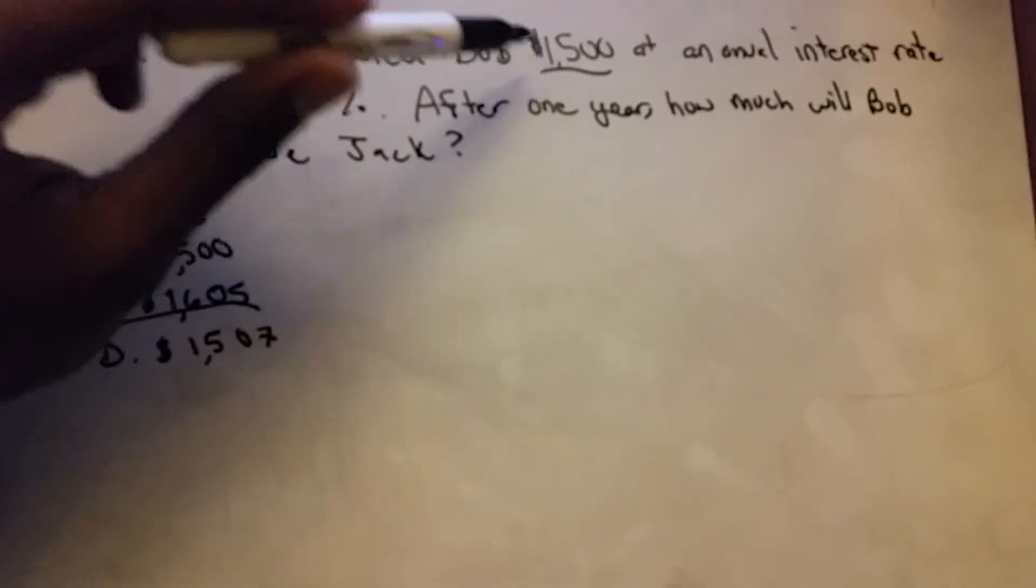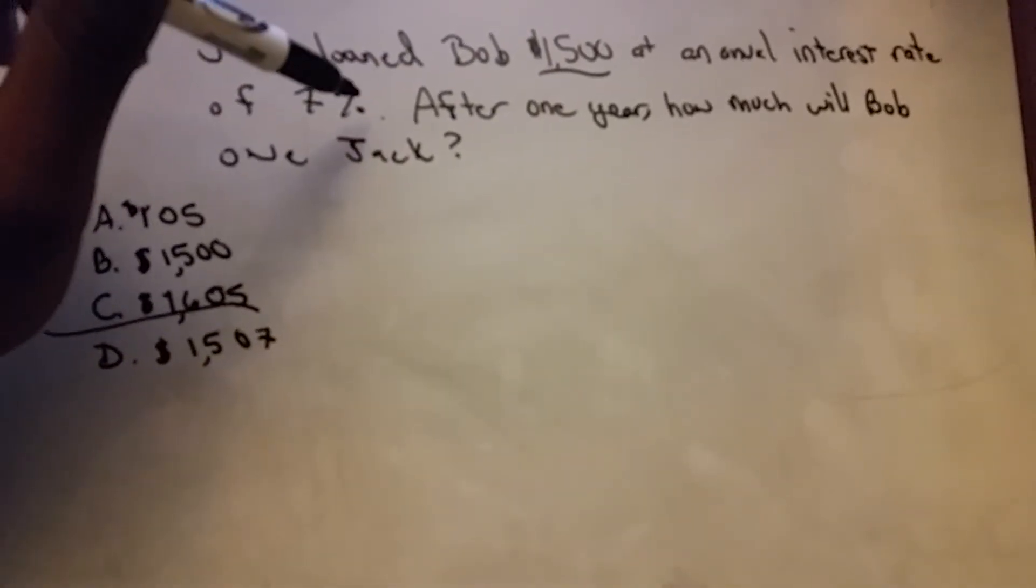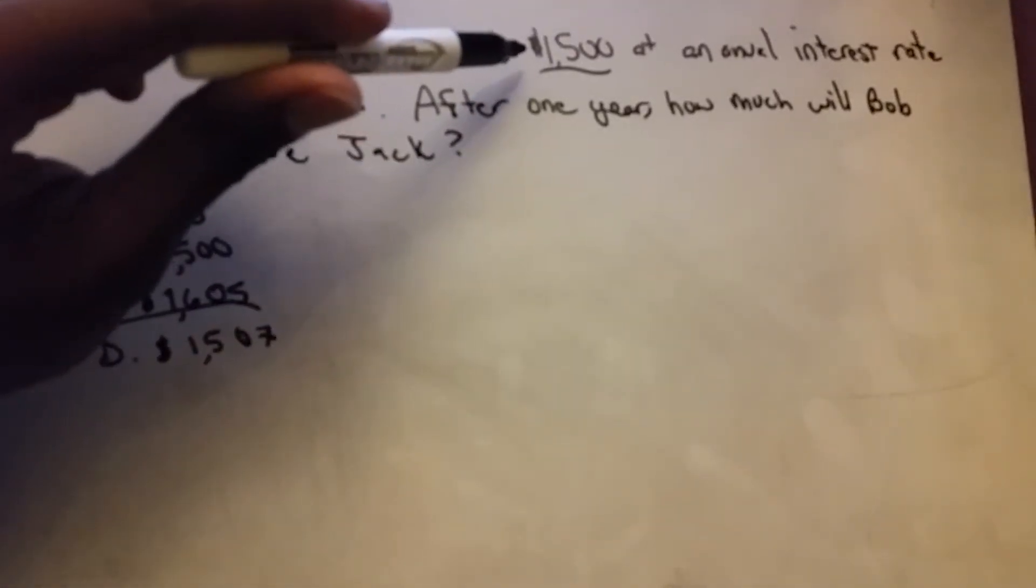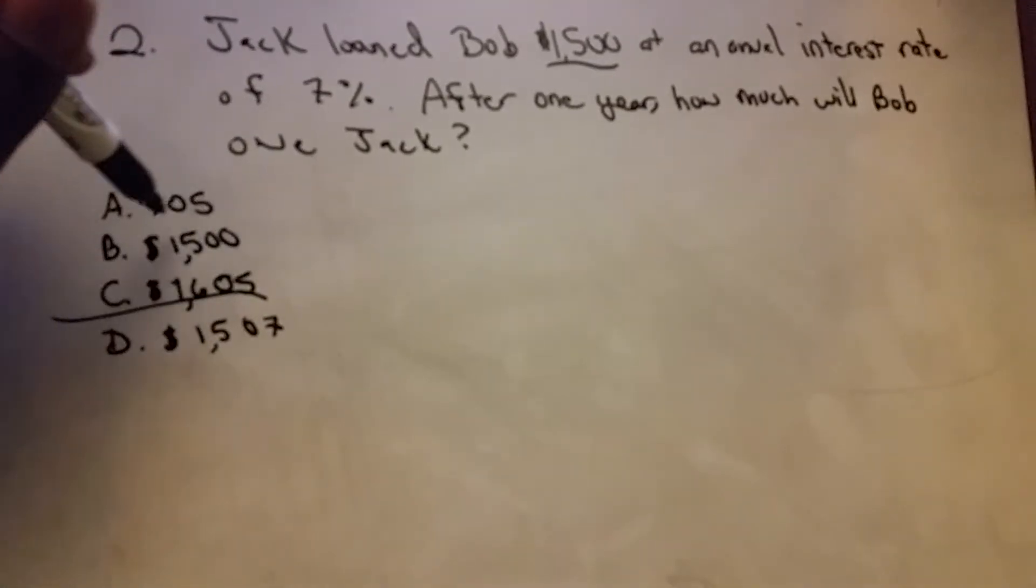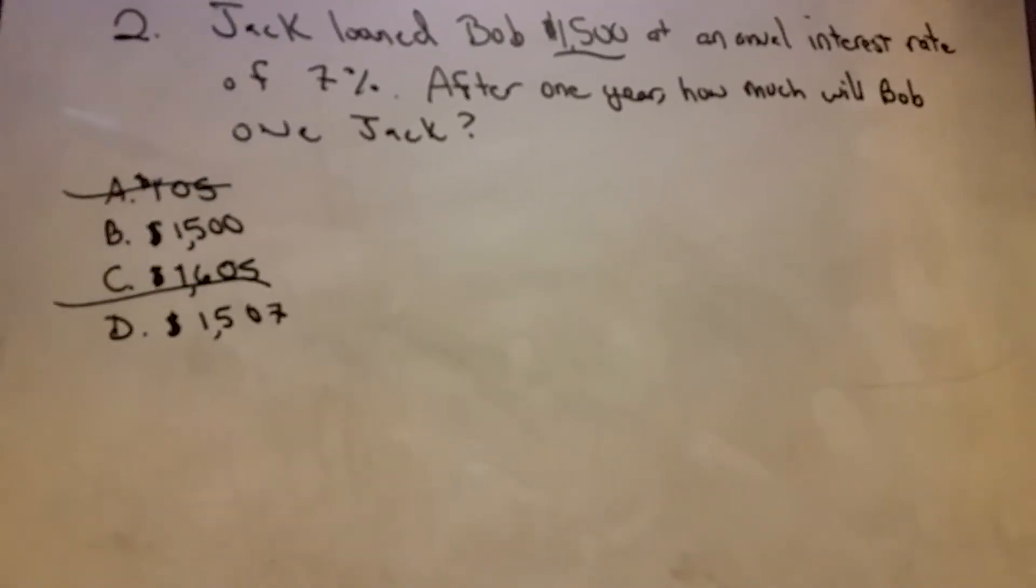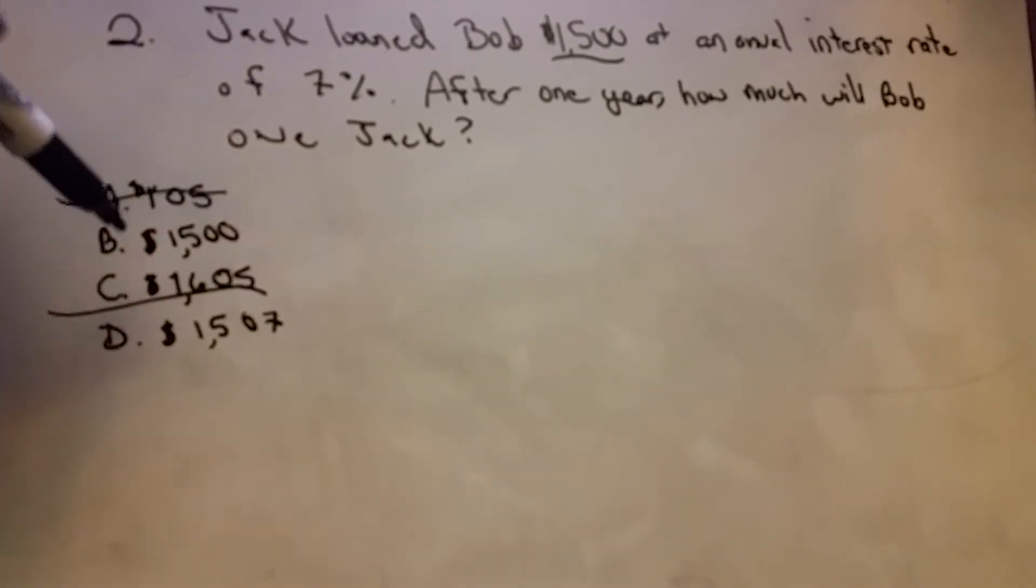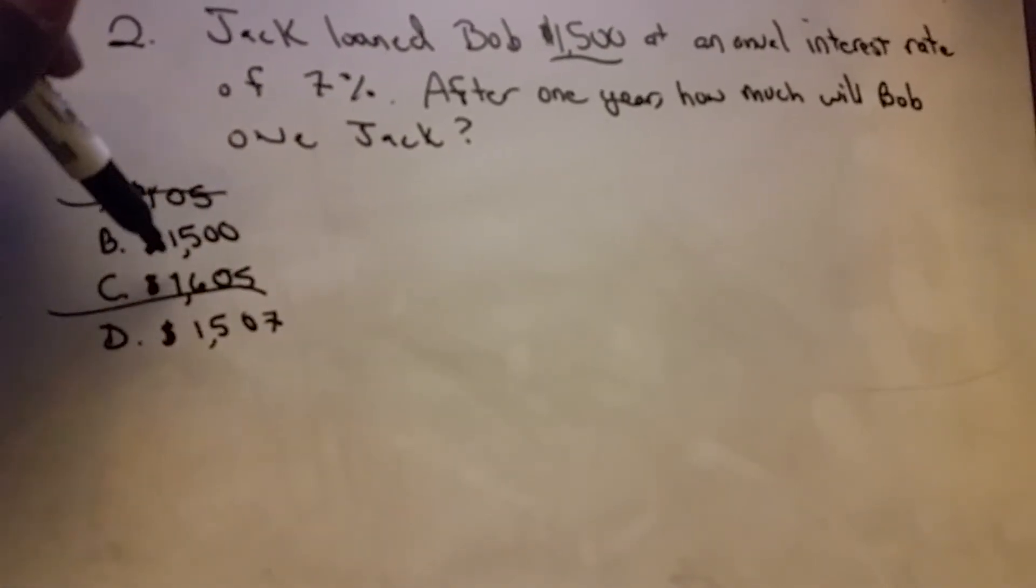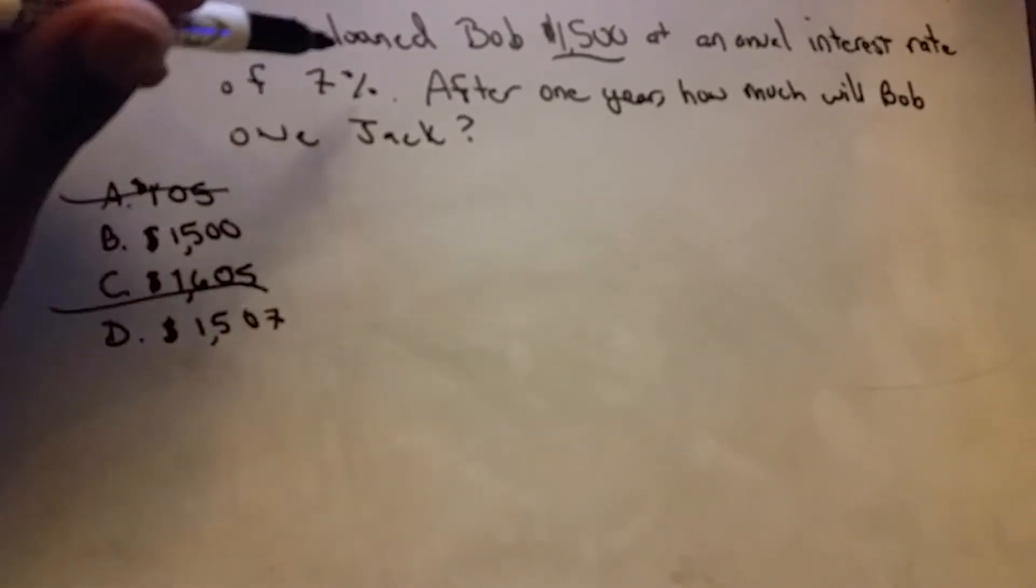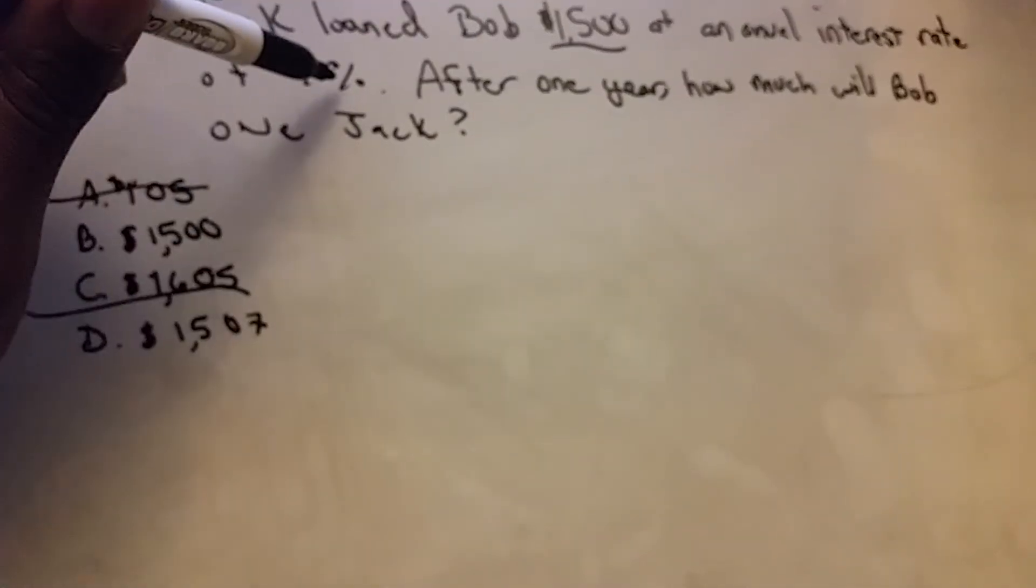$1,500 plus whatever 7% is—so whatever the amount is, it's going to have to be more than that $1,500. So the amount can't be $105 because that's less than what he's borrowing in the first place, and it can't be $1,500 because that's the amount that he's borrowing.